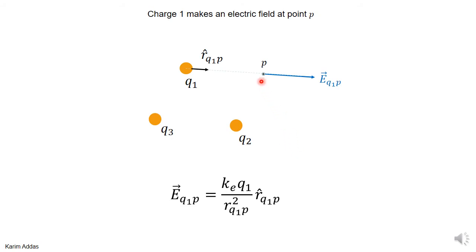The electric field at point P due to charge 1, so this is E at point P due to charge q1, is keq1 (the charge with its sign) divided by the distance between charge q1 and point P squared, times the unit vector that points from q1 to point P. This is the electric field at point P due to charge 1.